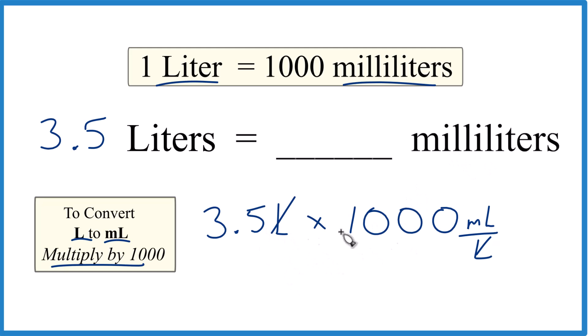So 3.5 times a thousand, that equals 3,500. And the units, that's going to be our milliliters. So in answer to our question, 3.5 liters is 3,500 milliliters.